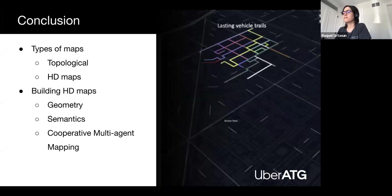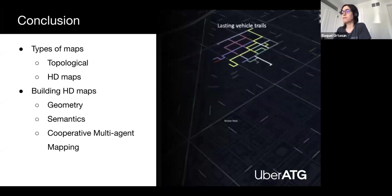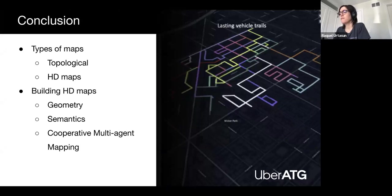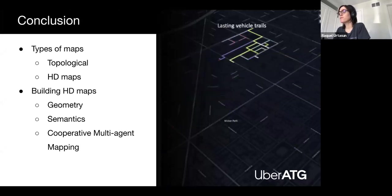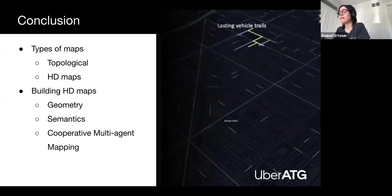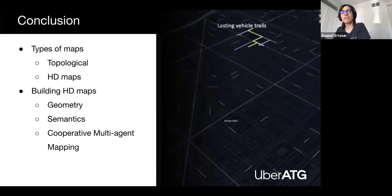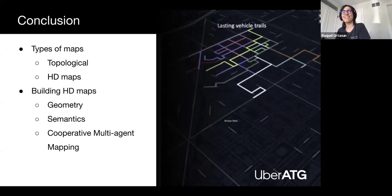So to conclude, I discussed two types of maps employed in self-driving, topological maps and high-definition maps. I then showcased how to build algorithms where humans can collaborate with machines to reduce the cost of creating HD maps. Finally, I showed an approach to route a fleet of vehicles to map entire cities in a dynamic and coordinated manner. Thanks for your attention. This is all for me. Thank you.